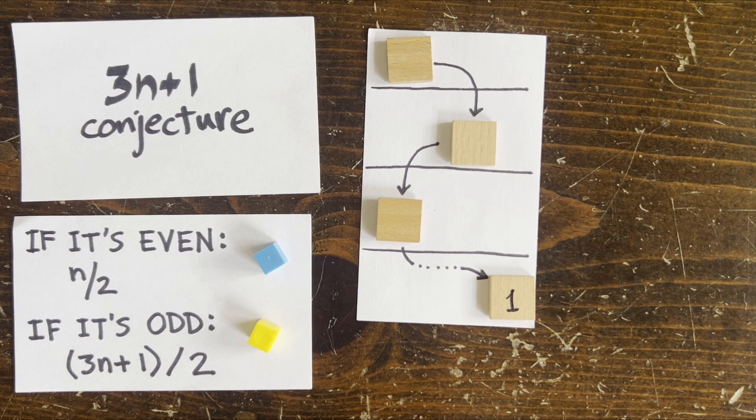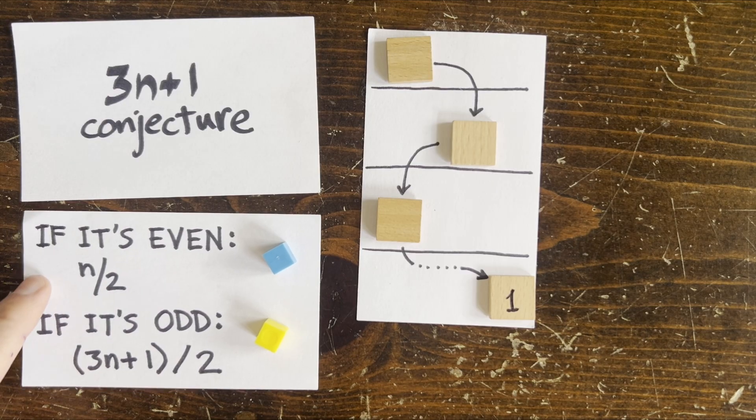Greetings. Welcome back. The 3n+1 problem says start with any number. If it's odd, multiply it by 3 and add 1. And if it's even, cut it in half.